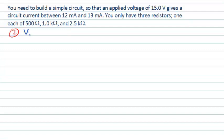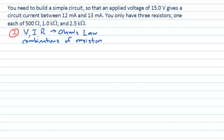The relationship between voltage, current, and resistance tells us we're going to need to use Ohm's law. In addition, because we have several resistors, we're going to have to think about what combination or combinations of resistors might be useful — whether combining them in series, combining them in parallel, or possibly both.